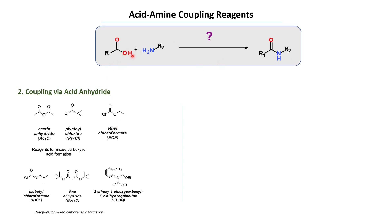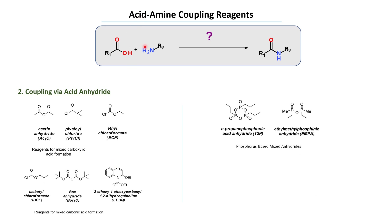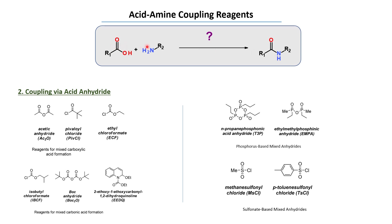We can also convert this acid to a mixed carbonic anhydride using acetyl chloroformate, pivaloyl chloride, and the EEDQ reagent. Additionally, we can form mixed anhydrides using phosphorus-based reagents like T3P and ethyl methyl phosphonic anhydride, or using methyl sulfonyl chloride and para-toluene sulfonyl chloride to get a sulfonate-based mixed anhydride.